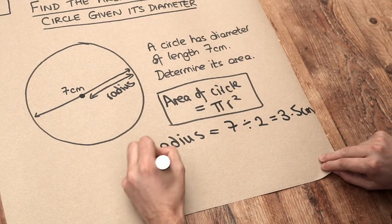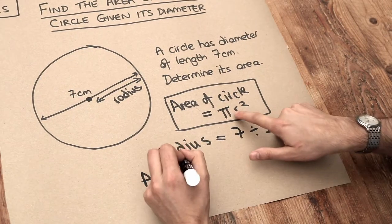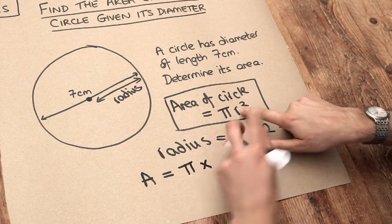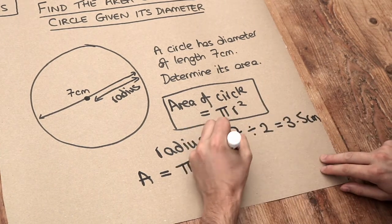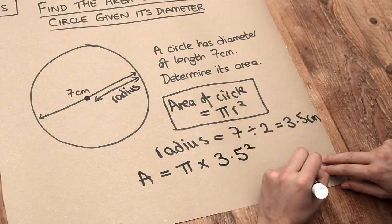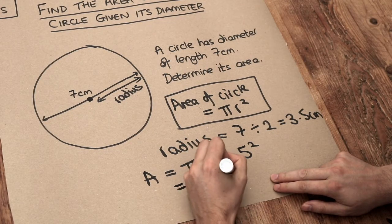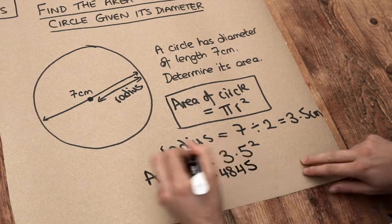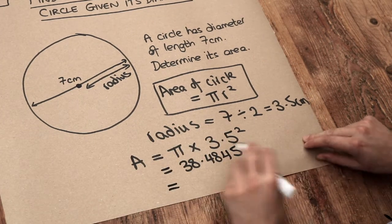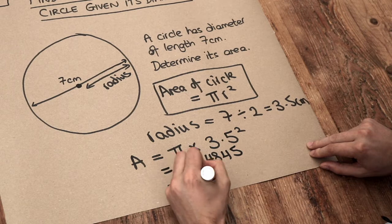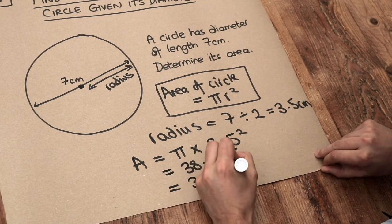So the area of our circle will be pi times and then the radius squared. So 3.5 squared. And that is equal to 38.4845. And if we round that to say three significant figures that's just going to be 38.5 centimetres squared.